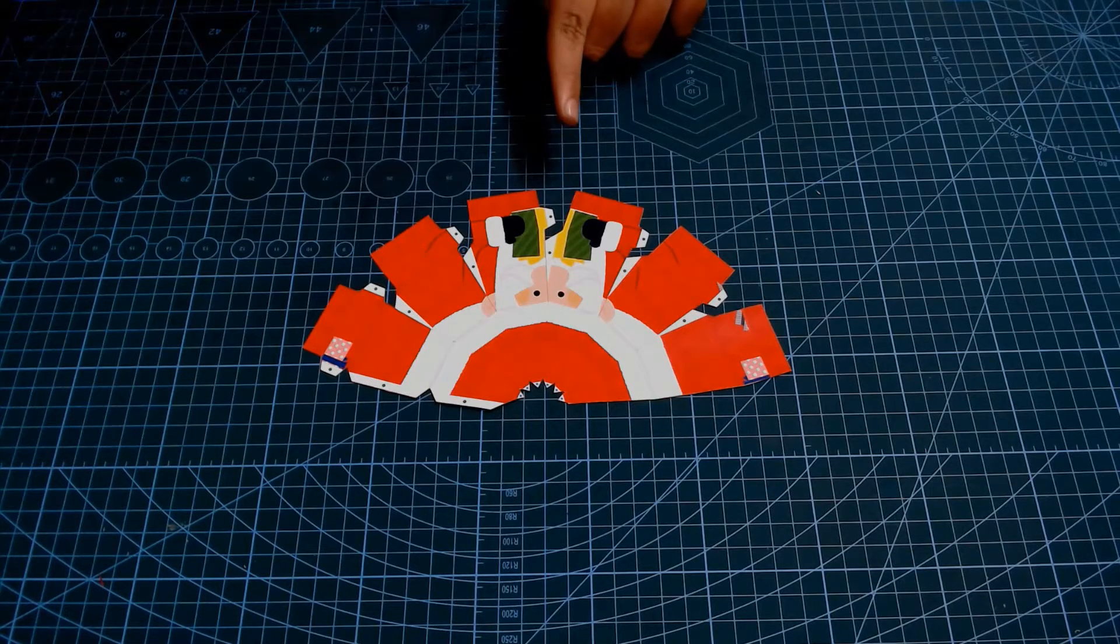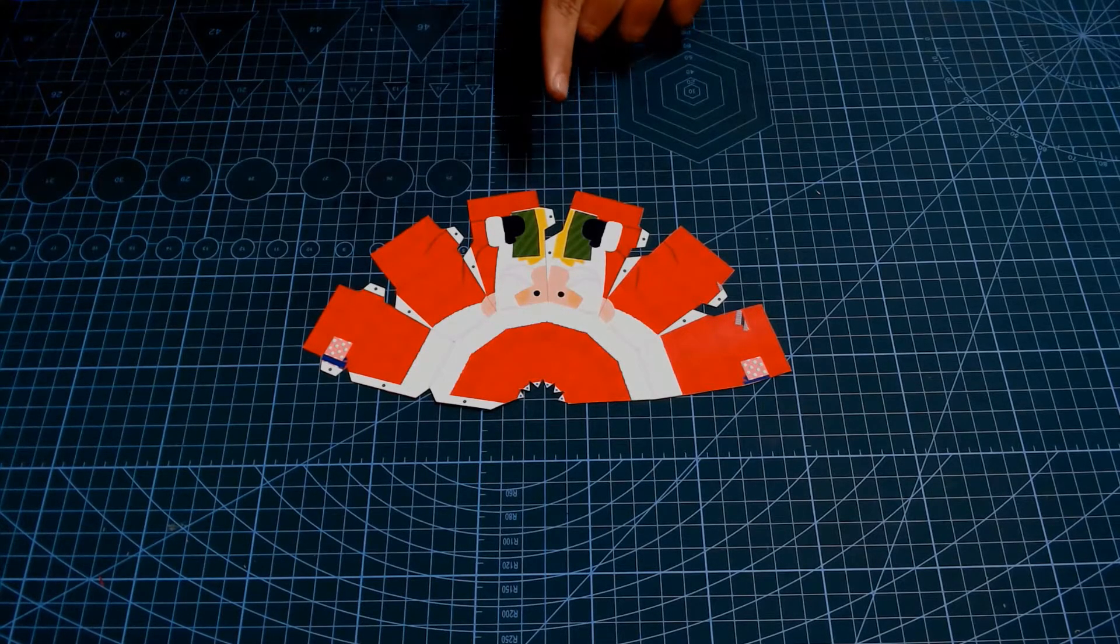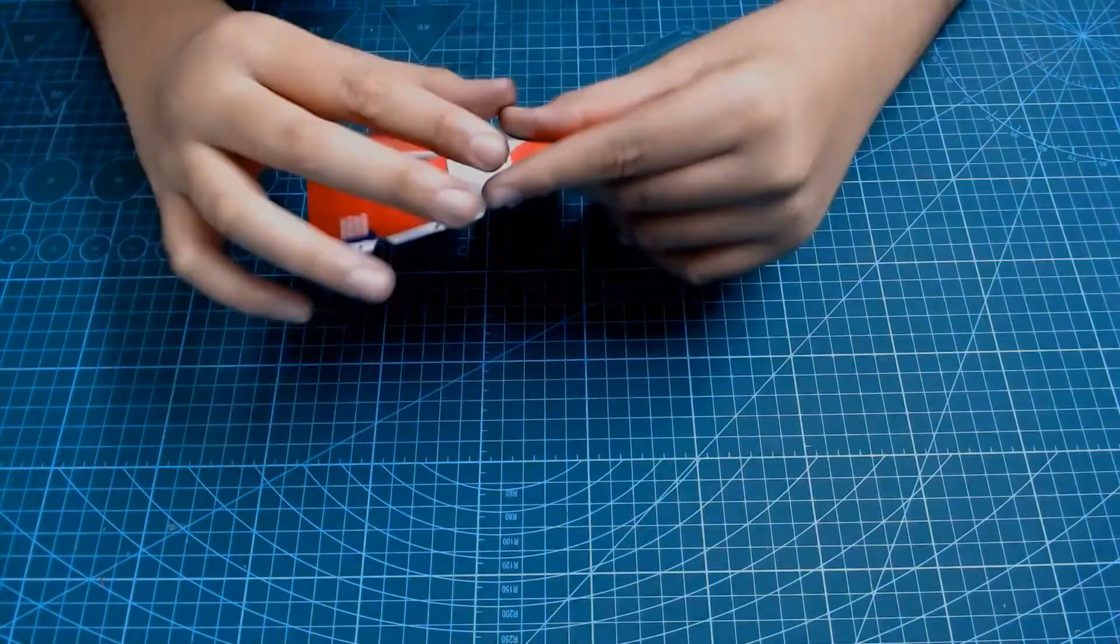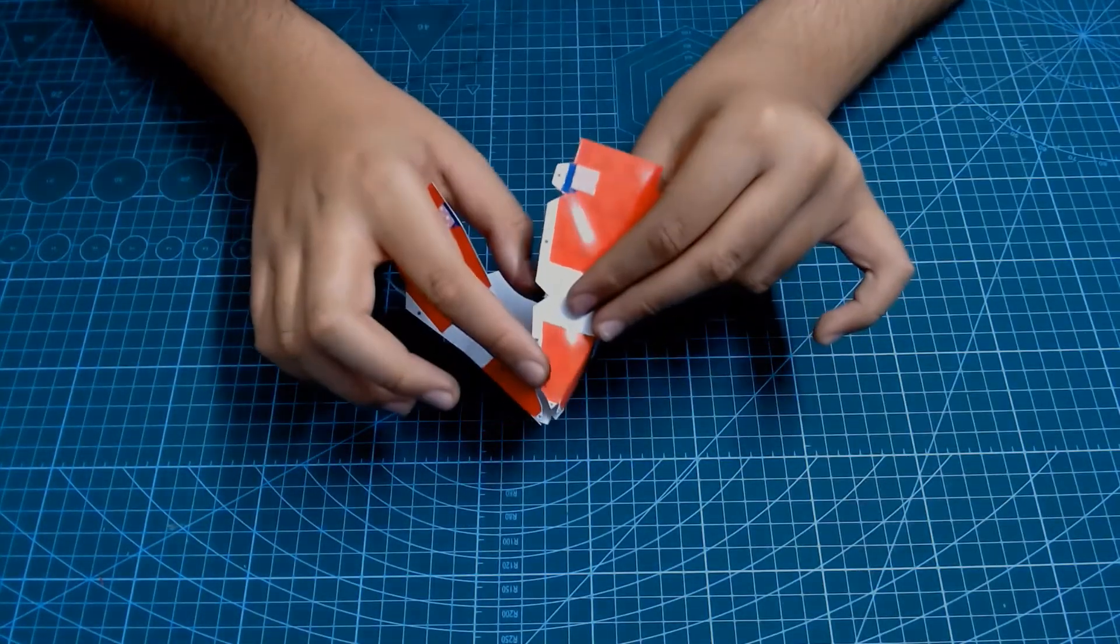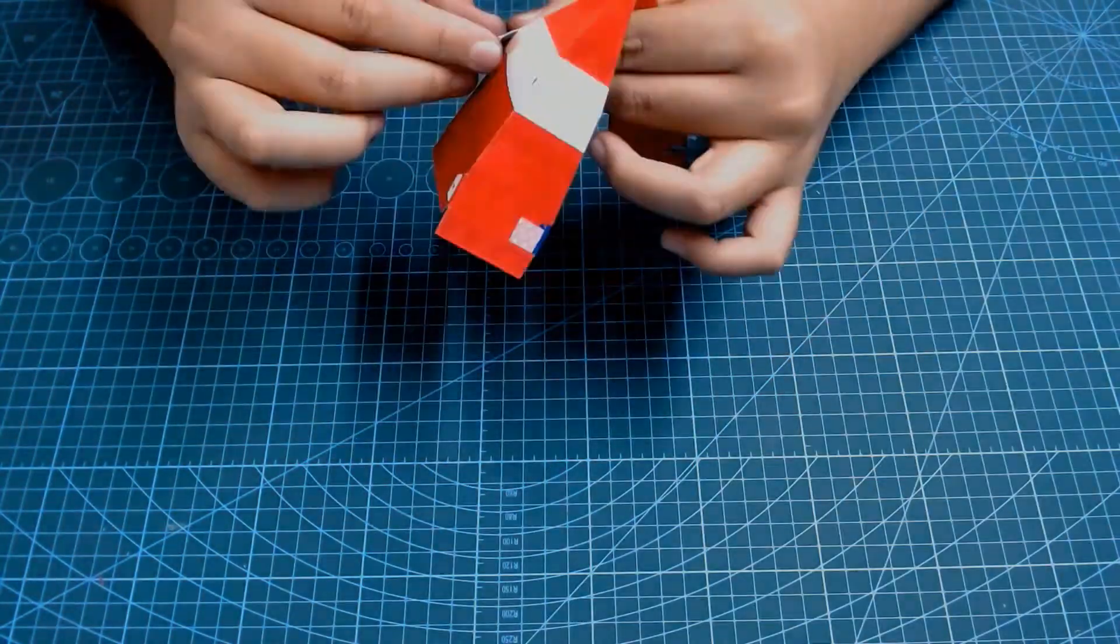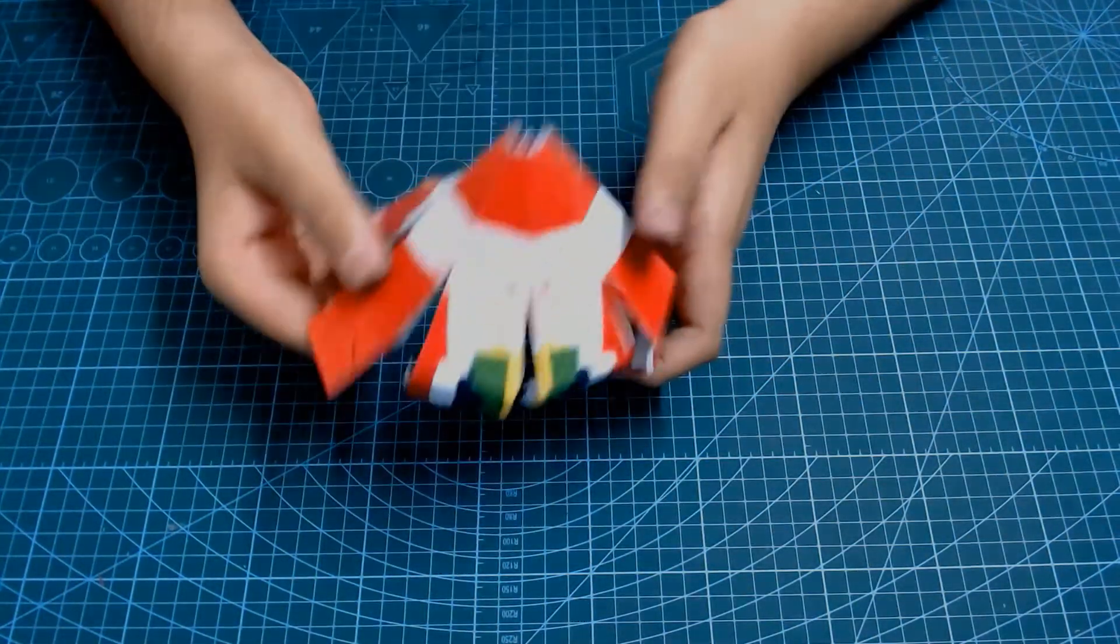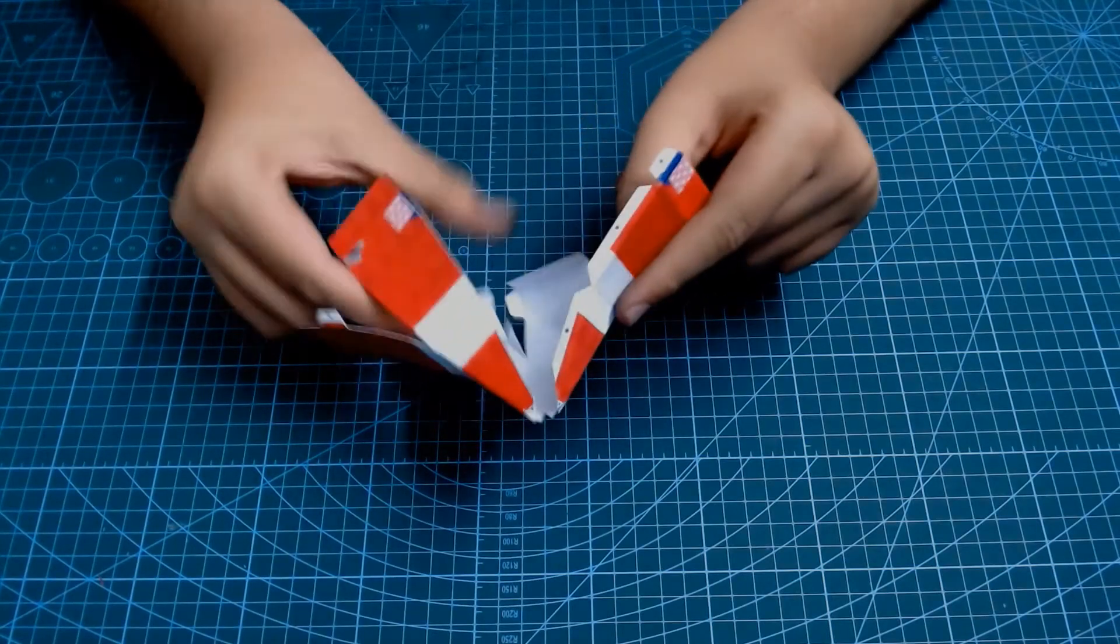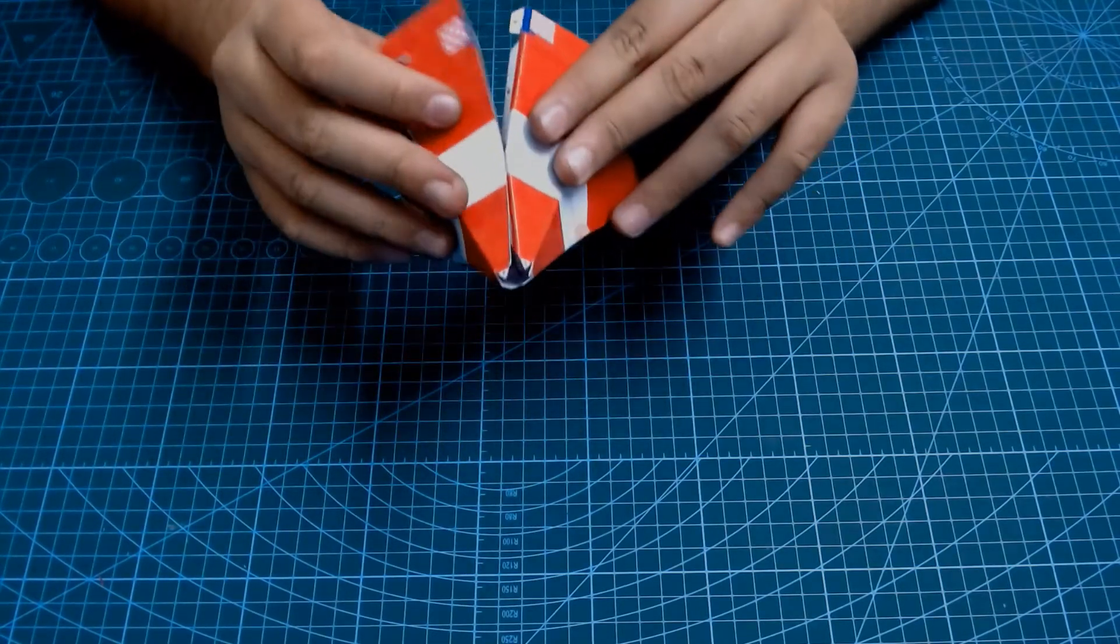Now, the first thing we're going to have to do is start folding this piece into an egg shape. Then, what you have to do is start folding these white tabs. So, when you get a shape like this, you can start applying glue on the white tabs.